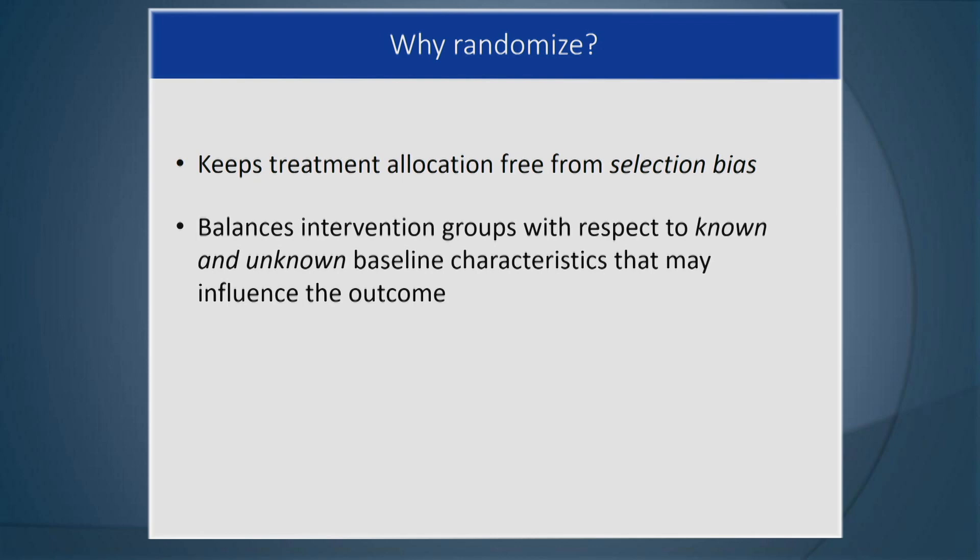Randomization balances intervention groups with respect to known and unknown baseline characteristics that may influence the outcome. You may account for known factors like age group or socioeconomic status, but what about unknown baseline characteristics? Randomization takes care of those as well. That's the beauty of randomization — you take care of what you know and also what you don't know that could influence the outcome.